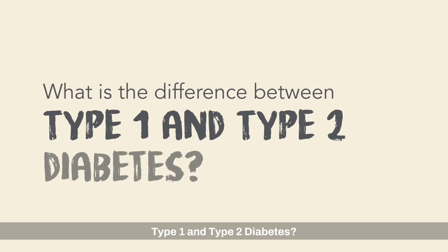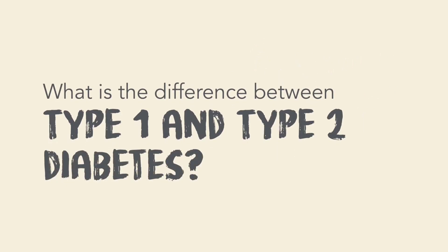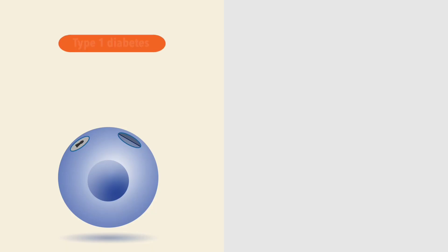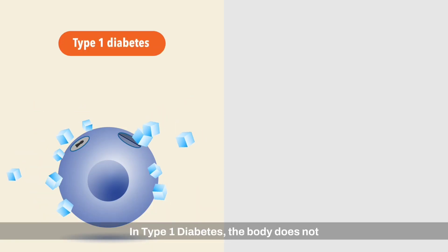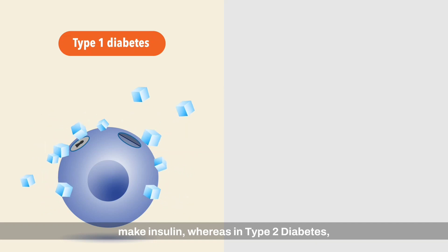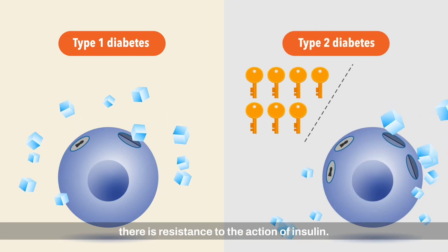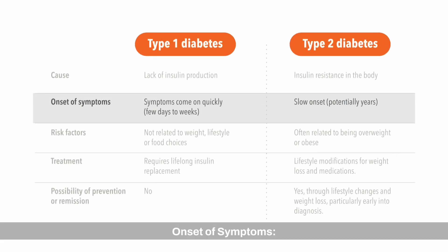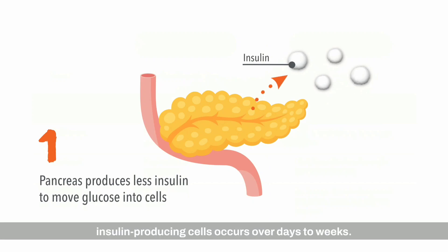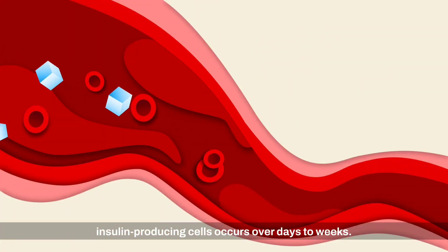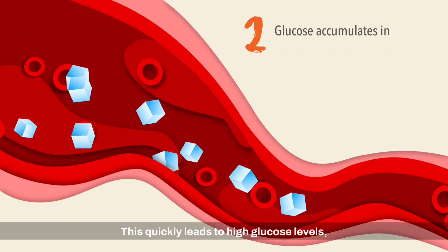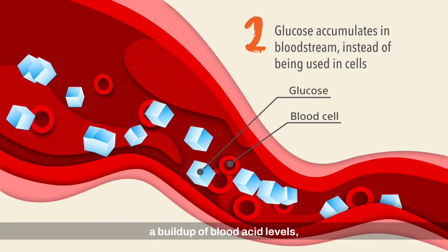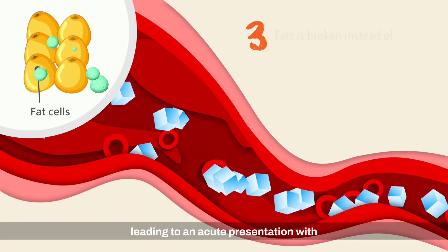What is the difference between type 1 and type 2 diabetes? In terms of cause, in type 1 diabetes the body does not make insulin, whereas in type 2 diabetes there is resistance to the action of insulin. Regarding onset of symptoms, in type 1 diabetes the loss of insulin-producing cells occurs over days to weeks.